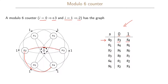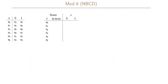Note that we do not have an explicit output function here. Using this state transition table, let's make our first attempt at a state assignment using the NBCD method. So s0 = 000, s1 = 001, s2 = 010, s3 = 011, s4 = 100, and s5 = 101.